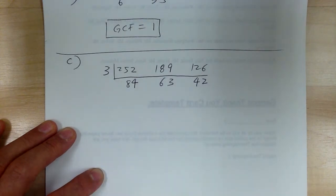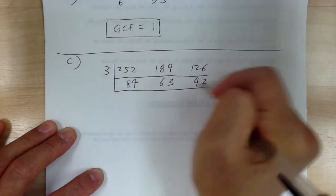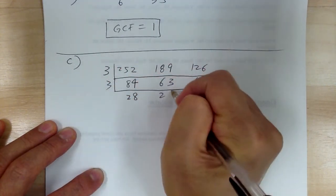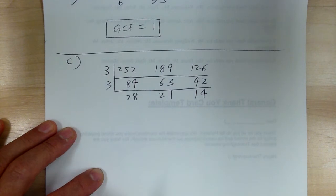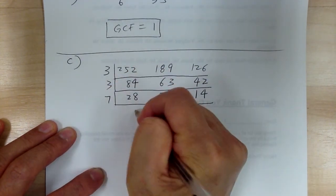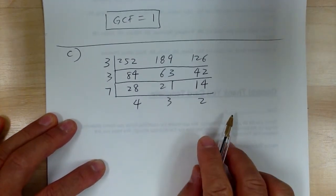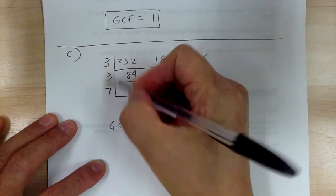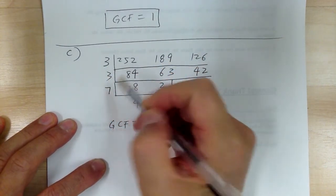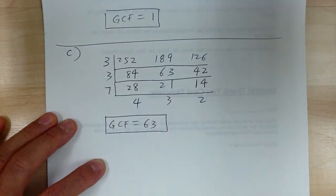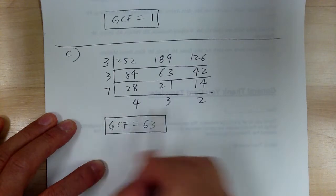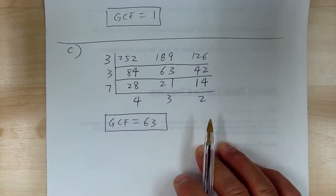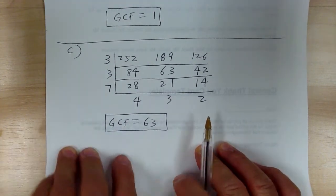Keep trying 3 again. Divide by 3 again and again until you cannot divide by 3 anymore. Then go to 5 — no. Try 7 — and you get 4, 3, and 2. So your GCF equals all those divisors multiplied together: 3 times 3 is 9, times 7 is 63. That way you don't have to do three separate factor trees, especially with three big numbers — it wastes too much time. That's how you find the GCF.